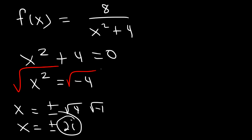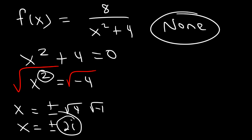So if you get a situation where x squared equals a negative number, or any even exponent equals a negative number, you're not going to get a vertical asymptote. If you get an imaginary solution, there are no vertical asymptotes.